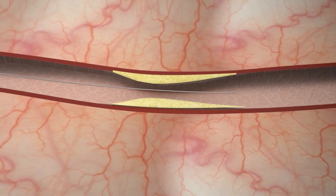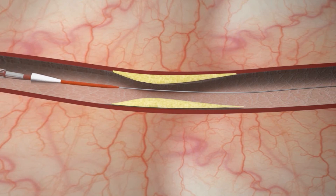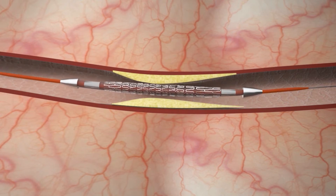The guide wire is replaced with a special wire called a PTCA wire, and the lesion is crossed with the help of this wire. After proper bed preparation, a stent mounted on a balloon catheter is advanced.